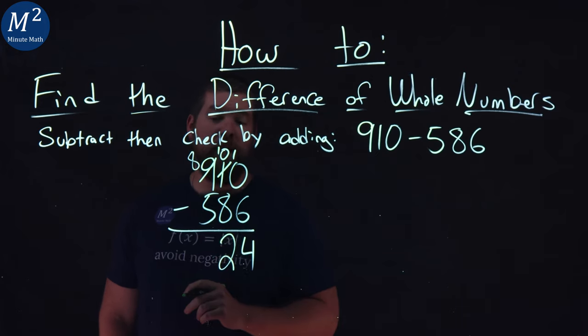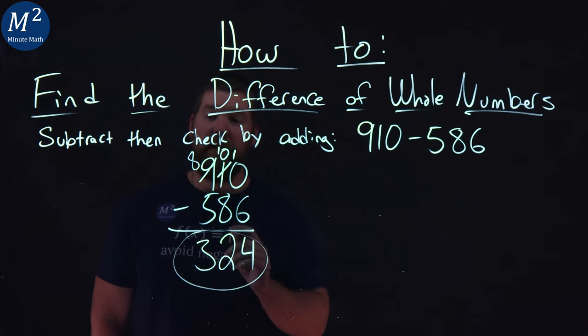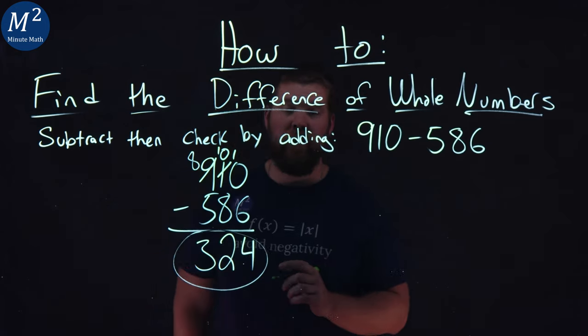Lastly, 8 minus 5 becomes simple here. 8 minus 5 is a 3. So 324 is the answer of 910 minus 586.